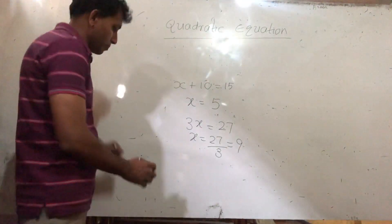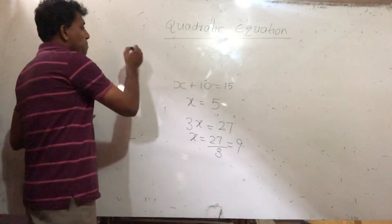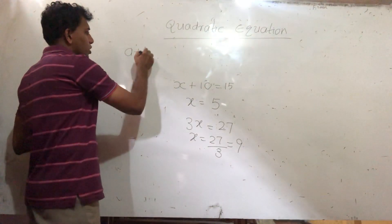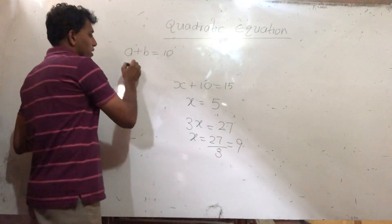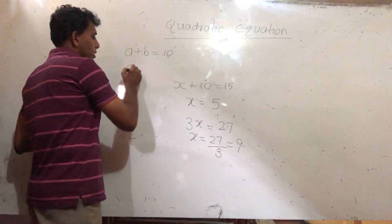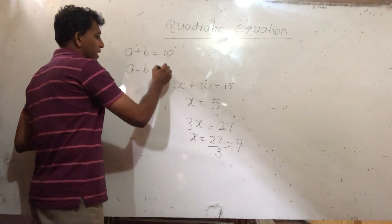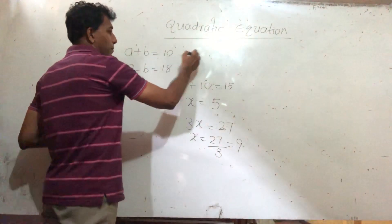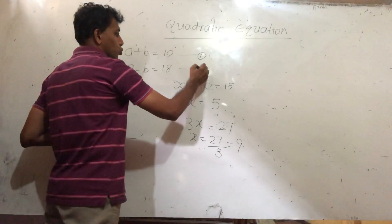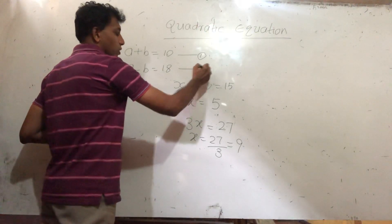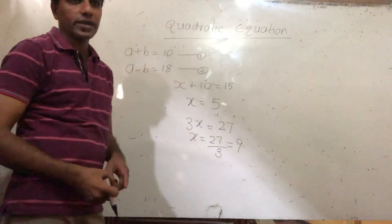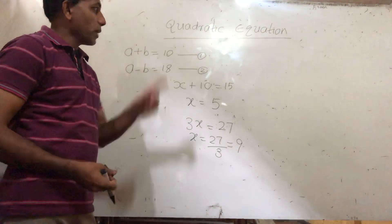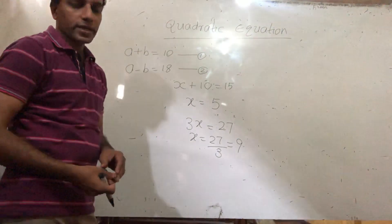You also learned another type called simultaneous equations. For example: a plus b equals 10, and a minus b equals 18. You number these equations one and two. You solved this in grade 9, so I won't show this now. The main part today is the lesson on quadratic equations.